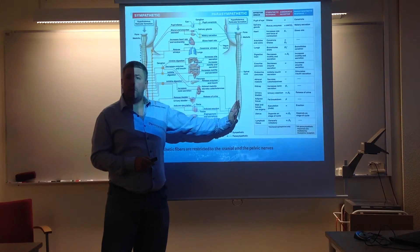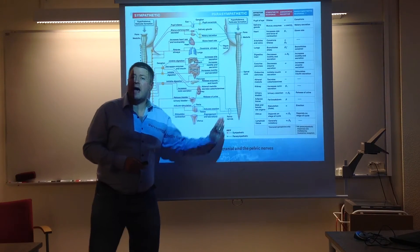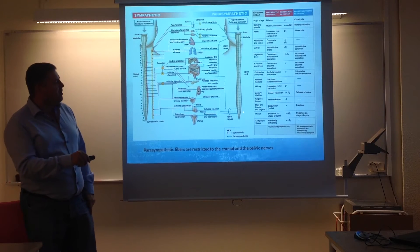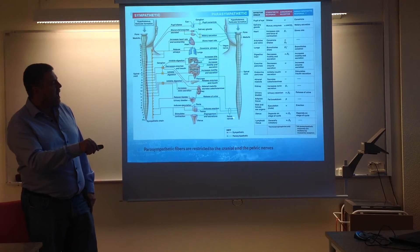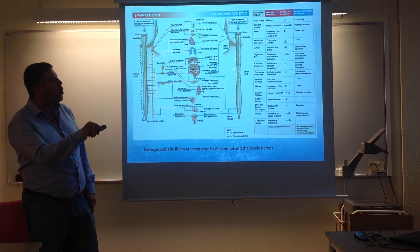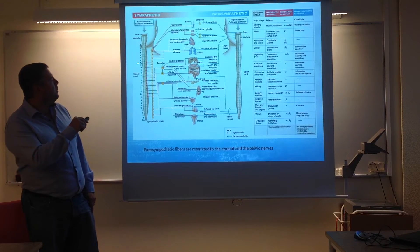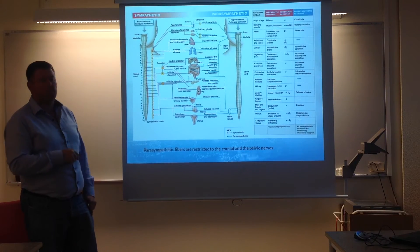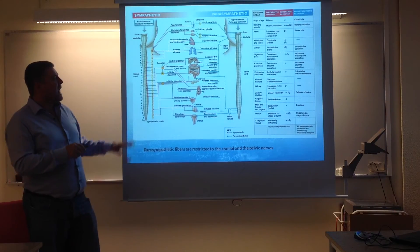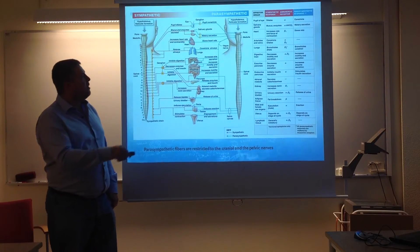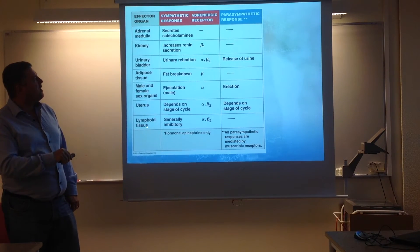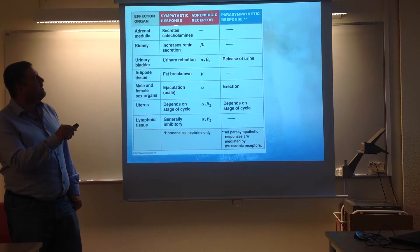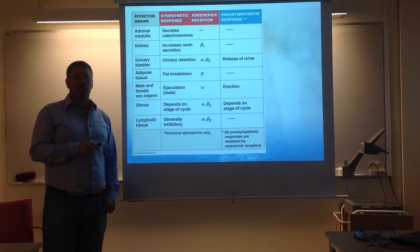The counterpart is the parasympathetic nervous system. As you can notice, in the parasympathetic nervous system there are only nerves leaving from high up — the cranial nerves — and lower down in the pelvic nerves. There are no parasympathetic fibers leaving the spinal cord at the level of the thoracic, cervical, or lumbar vertebrae. The next slide covers the different effector organs and how the sympathetic and parasympathetic responses affect them.